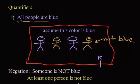You might also see this written as at least one person is not blue — it means the same thing. There are other ways of saying someone, but let's move on to our second quantifier.